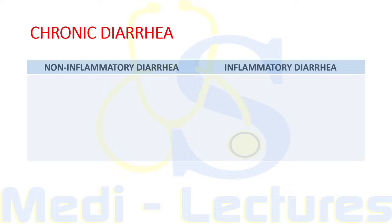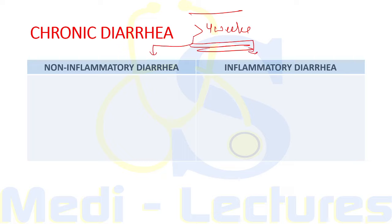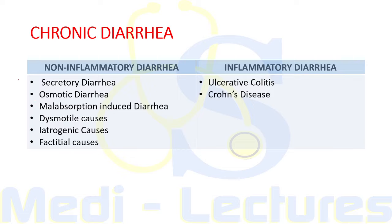Chronic diarrhea persists for more than four weeks. It is classified into non-inflammatory and inflammatory. Non-inflammatory includes secretory diarrhea, osmotic diarrhea, malabsorption-induced diarrhea, dysmotility causes including irritable bowel syndrome, hyperthyroidism, prokinetic drugs, iatrogenic causes like cholecystectomy or ileal resection, and factitial causes like Munchausen syndrome and eating disorders. Inflammatory diarrhea mainly includes ulcerative colitis and Crohn's disease, which will be covered in a separate lecture.